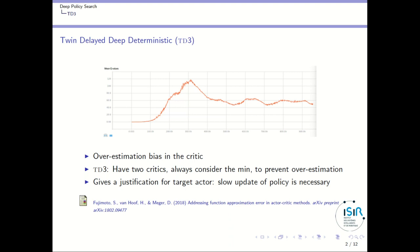In TD3, they have two critics, and each time they need the value in a critic, they will consider the mean between the two values, thus preventing overestimation. Empirically, the authors have shown that using these two critics improves much the convergence of a DDPG-like algorithm. Besides, in TD3, they give a justification for having also a target actor — you need a slow update of the policy if you want it to converge. This is related to the fact that in TRPO and PPO, you should not move too far away from the current policy because you are using a gradient with respect to that previous policy. So that's TD3: use two critics and take the mean.